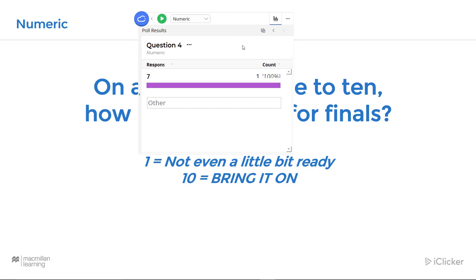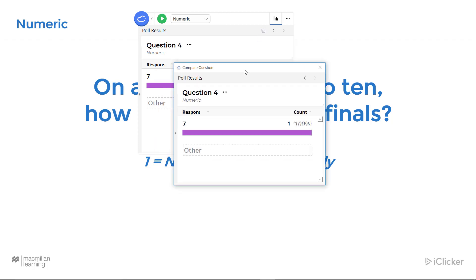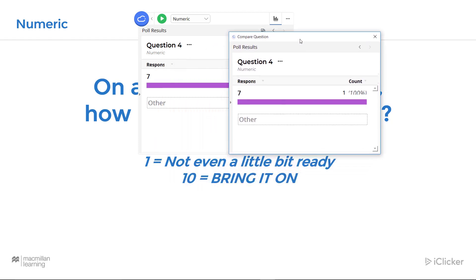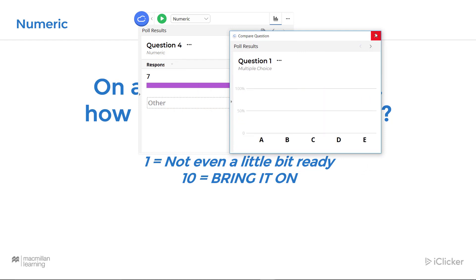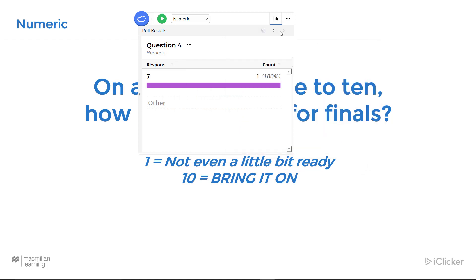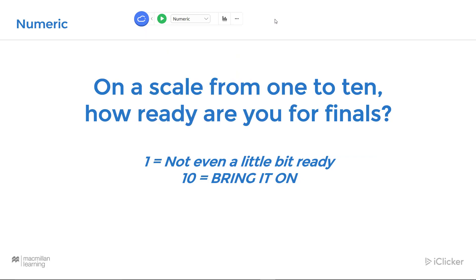In the results window, you can also click on the compare button if you want to compare different results across different questions. Clicking the results button will hide the results, and now you're ready to ask another question. Remember, questions can always be graded after class as well at the instructor website.